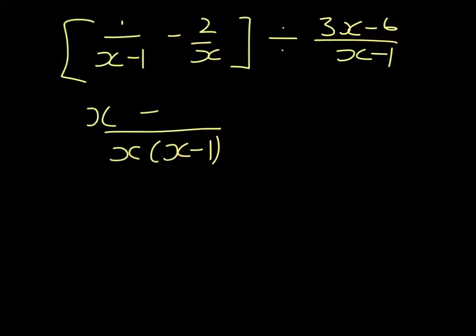And in the second fraction, if we multiply the denominator by x minus 1, then we multiply the numerator by x minus 1.